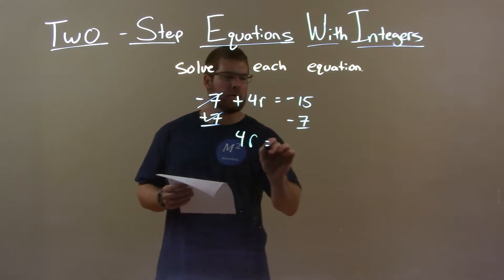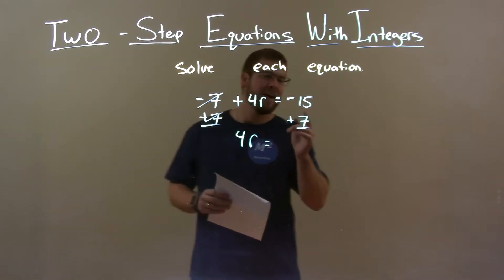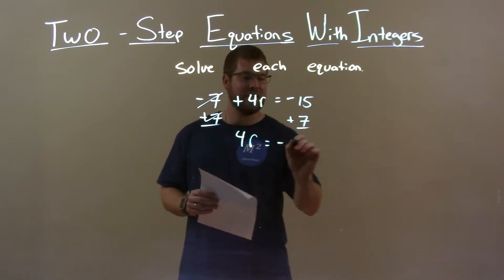We have 4r on the left here and negative 15, almost messed up there. Negative 15 plus 7 is a negative 8.